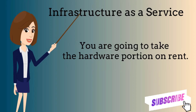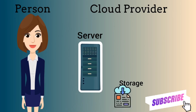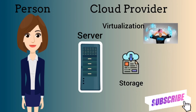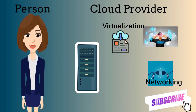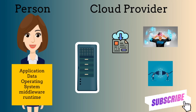The first one is Infrastructure as a Service, or IaaS. In this type, you are basically renting the hardware portion. The cloud provider manages servers, storage, virtualization, and the networking portion. You, on the other hand, still have control over the software portion such as the application, data, operating system, middleware, and runtime.